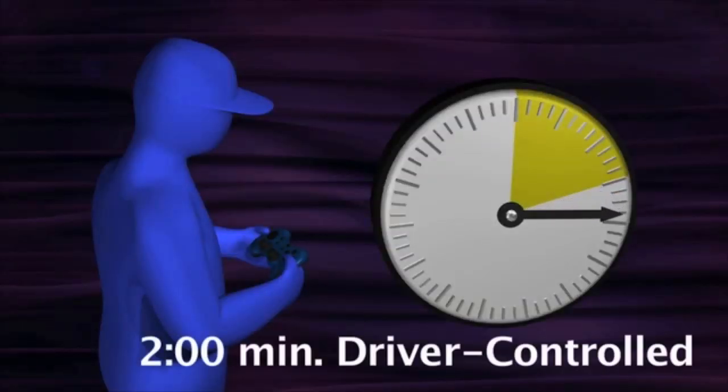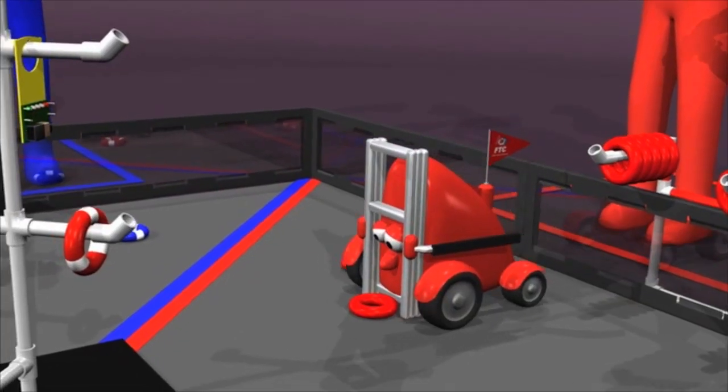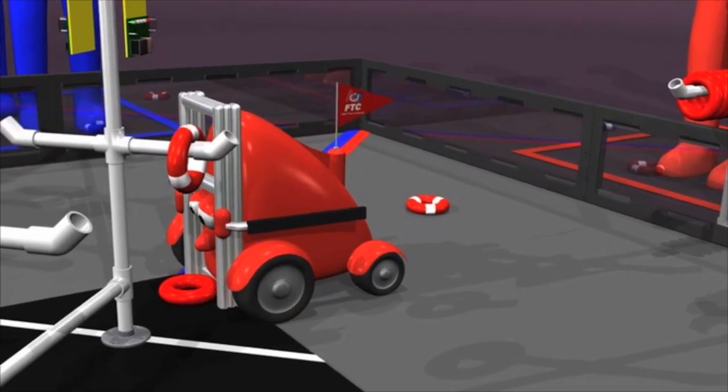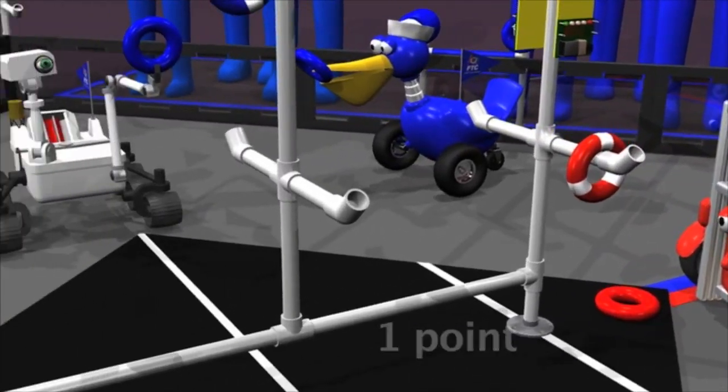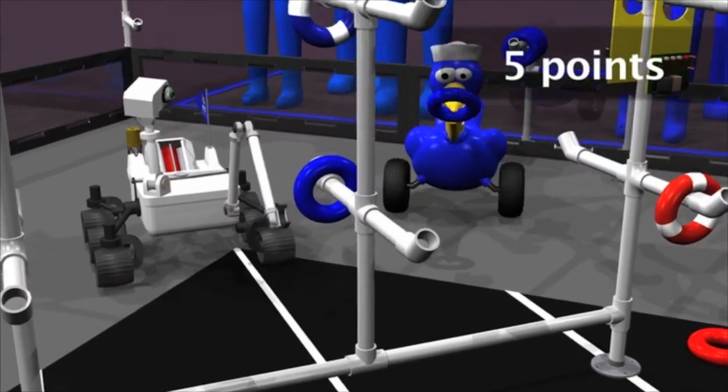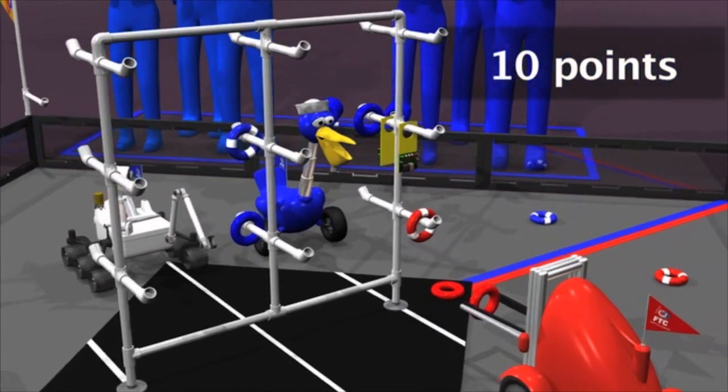After the autonomous period, the drivers pick up their controllers for the driver-controlled period. Each ring placed on the center floor goal is worth one point. Rings hung on the rack pegs are worth 5, 10, or 15 points depending on the height.